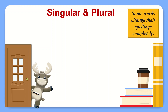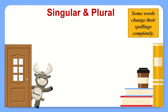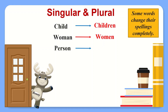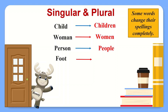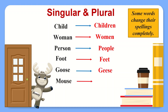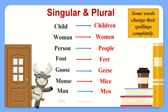Rule number two. Some words change their spellings completely. For example, ox becomes oxen.